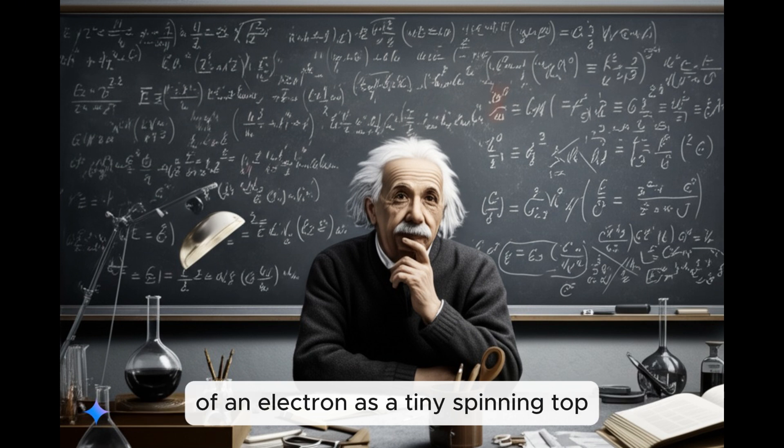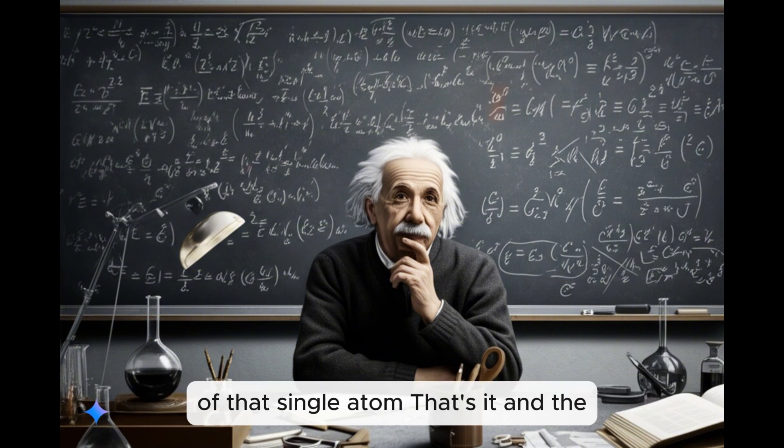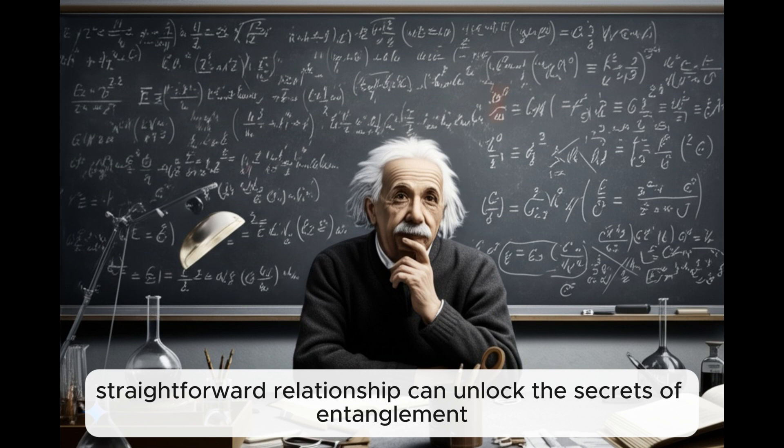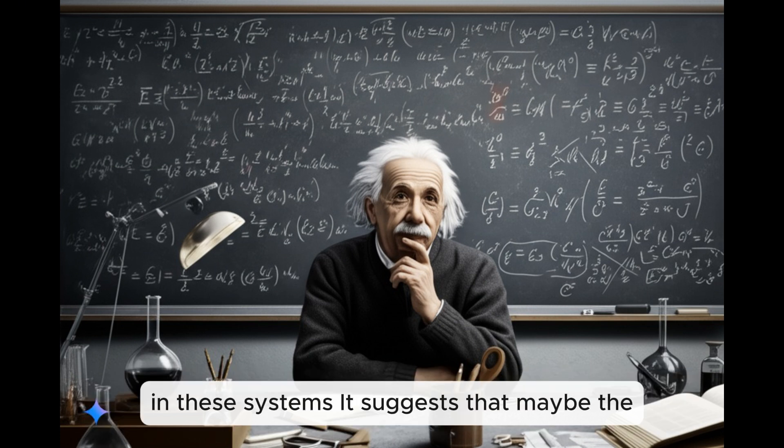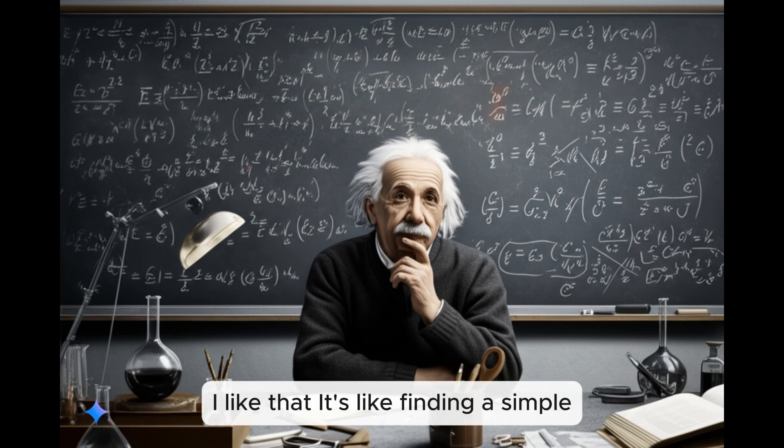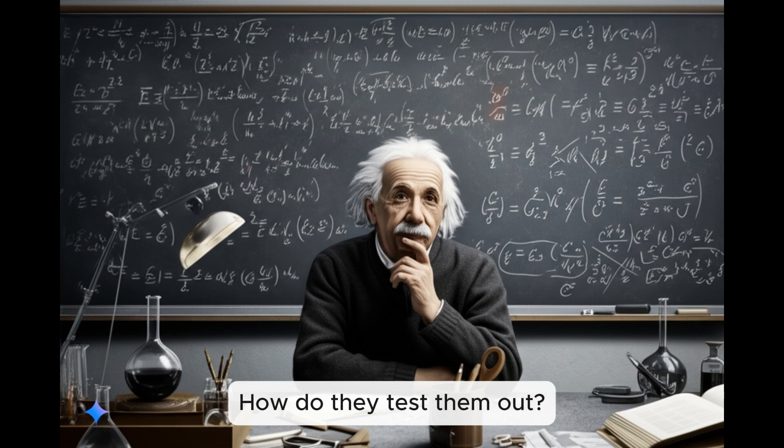it's directly related to the number of its upspin and downspin electrons. Spin, like you think of an electron as a tiny spinning top. Exactly. And also the number of upspin and downspin holes. And holes are kind of like the absence of electrons, like a missing spot where an electron should be. So it's looking at the very specific makeup of that single atom. And the beauty of it isn't just that the formula itself is relatively simple, but that such a straightforward relationship can unlock the secrets of entanglement in these systems.